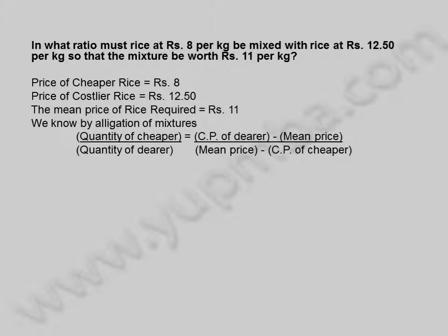quantity of cheaper by quantity of dearer is equal to cost price of dearer minus mean price, by mean price minus cost price of cheaper.